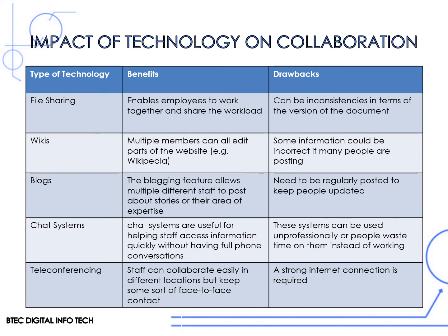When we think about how technology has impacted collaboration, we can look at different types of technologies. With file sharing, the benefits are that it enables employees to work together and share the workload, however there can be inconsistencies in terms of the version of the document people are working on. With wikis, multiple members can all edit parts of the same website, however some information could be incorrect if many people are posting at the same time.